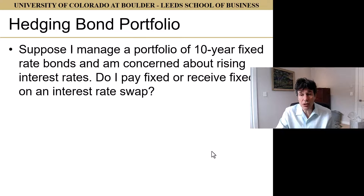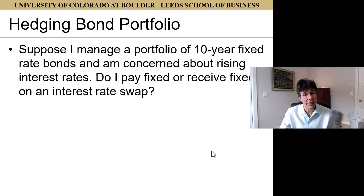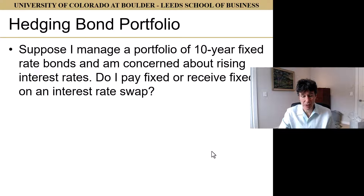You can also use interest rate swaps to hedge bond portfolios. If you manage a portfolio of ten-year fixed-rate bonds and are concerned about rising interest rates, you pay fixed and receive floating on the swap — essentially turning those fixed rate bonds into floating rate notes and reducing your interest rate exposure.